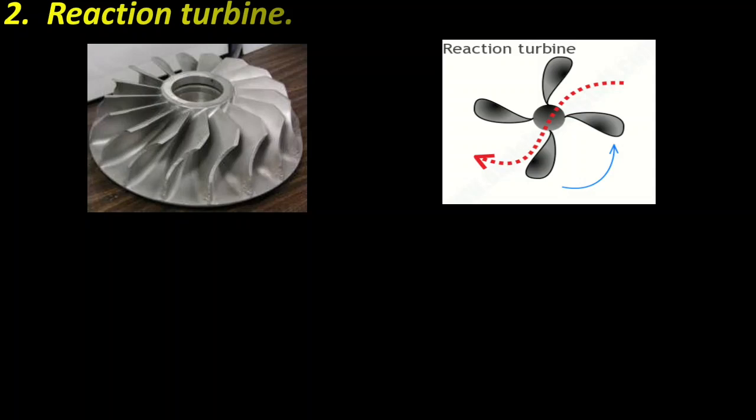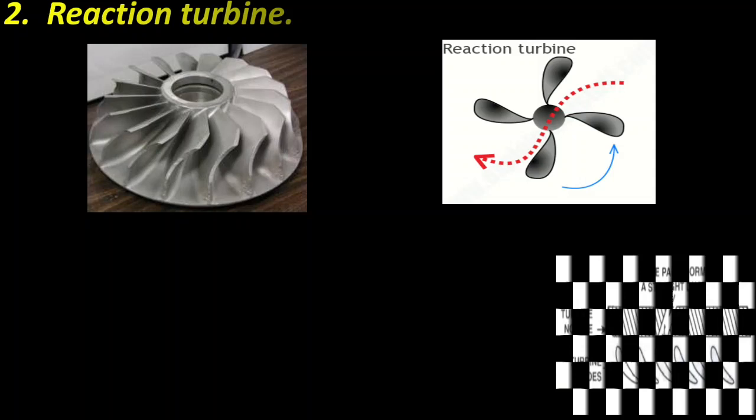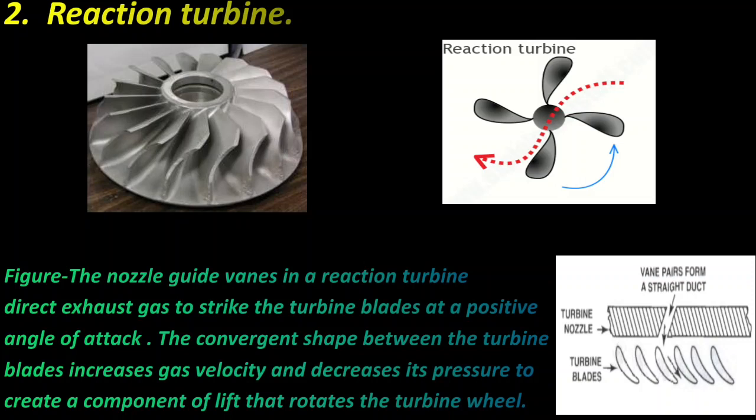Reaction turbine blade. You can see the pictures of the reaction turbine blade. It produces a turning force based on an aerodynamic action. To do this, the turbine blade forms a series of converging ducts that increase gas velocity and reduce pressure. The result is similar to what happens to an airfoil, in that the reduced pressure produces a lifting force. However, in a turbine, the force is exerted in the direction of rotation.